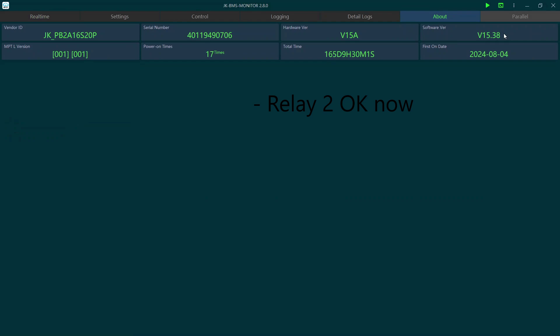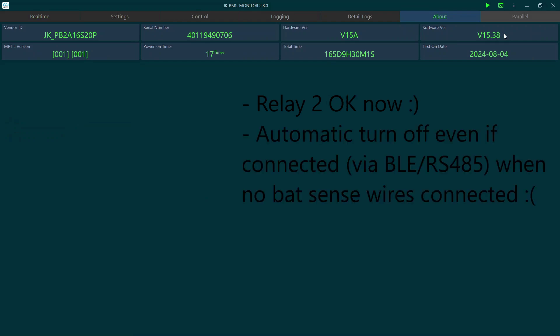Version 15.38 came with, I think, a new feature that apparently if the battery sense wires are not connected, the board will turn itself off after a few minutes, even if you are connected to it with Bluetooth or RS485. I could not find a way to disable this automatic turn off. During normal operation that behavior would of course be okay, but not when you have an active connection to it to maybe troubleshoot the problem. It made testing the board on my bench a real race against time, but I did not want to spend time making a resistor ladder and hooking it up to the battery sense wires.